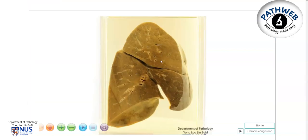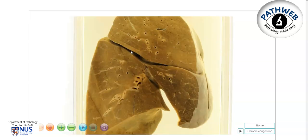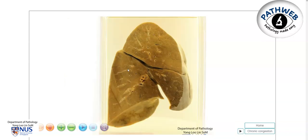In summary, this is a gross pathology specimen showing chronic venous congestion of the lung. We have diffuse brownish discoloration of the lung and we also have induration — stiffening or hardening — of the lung parenchyma. The most common cause of this is congestive heart failure. Thank you.